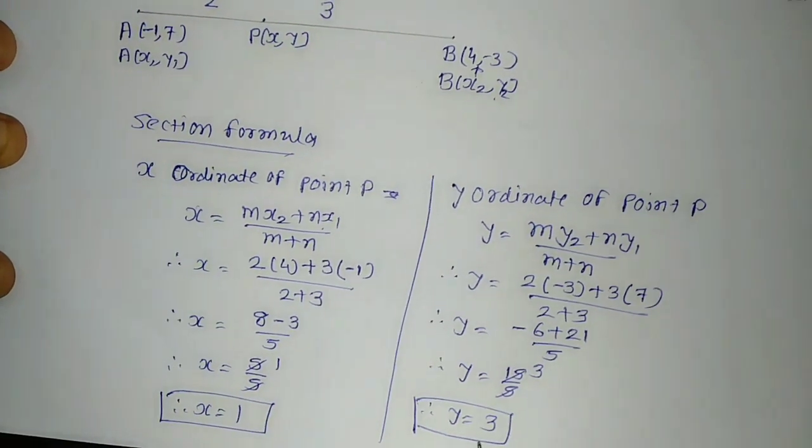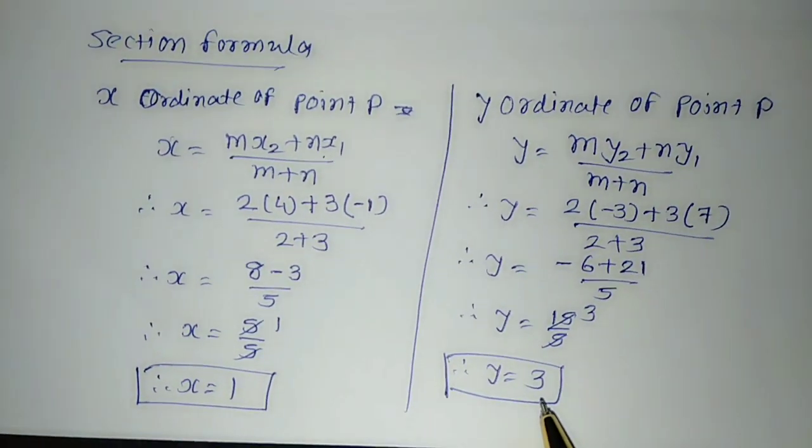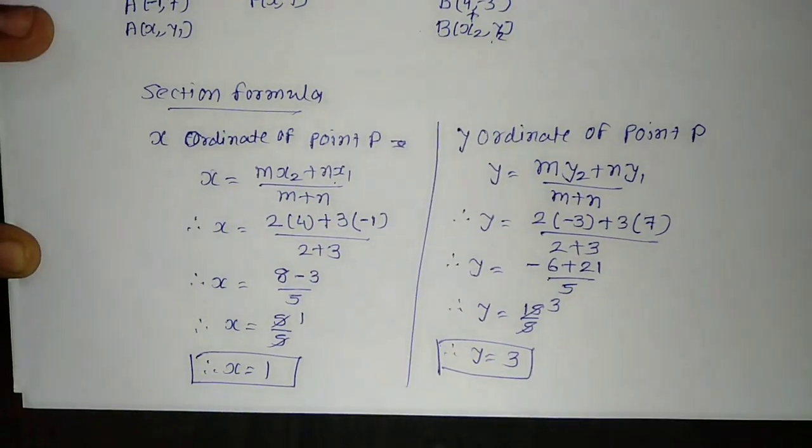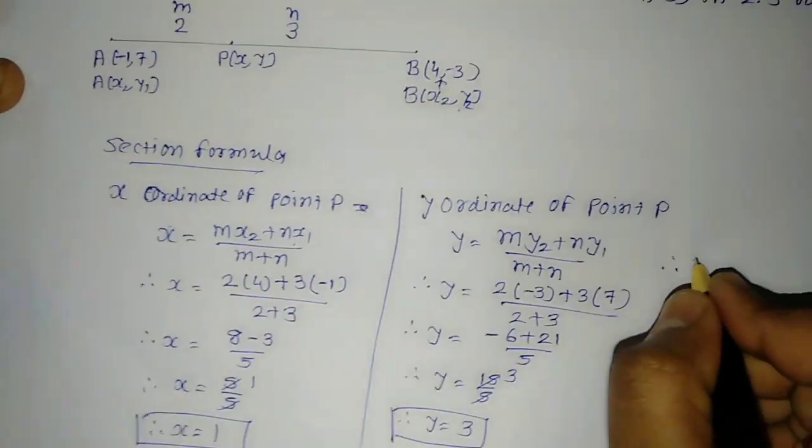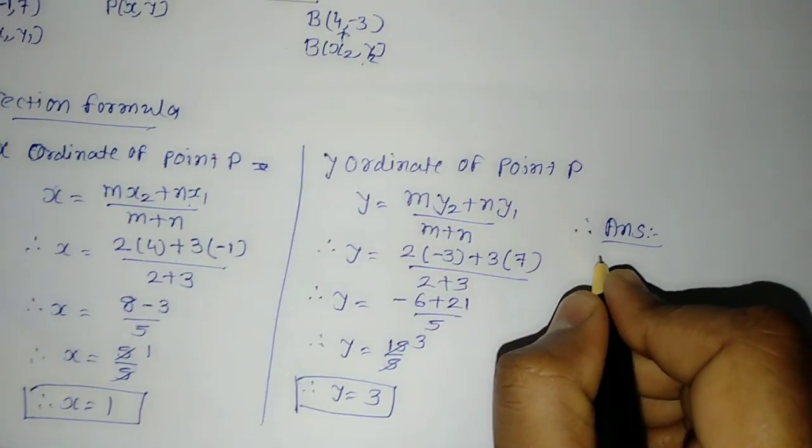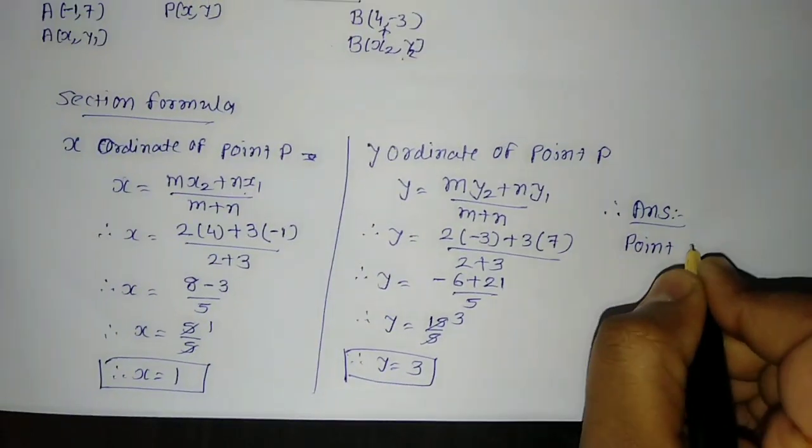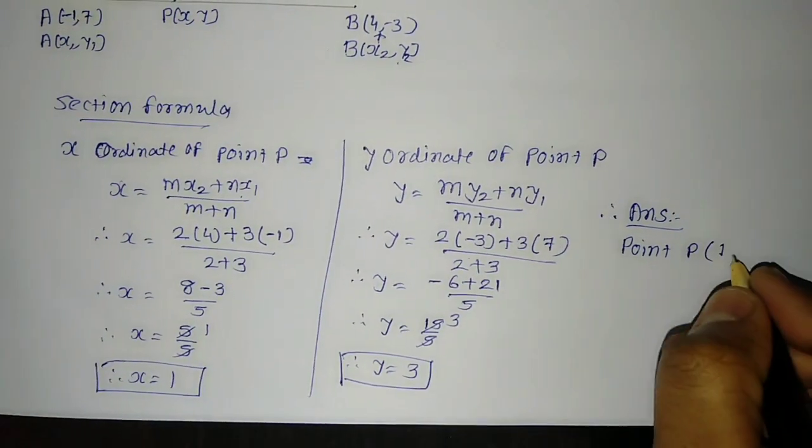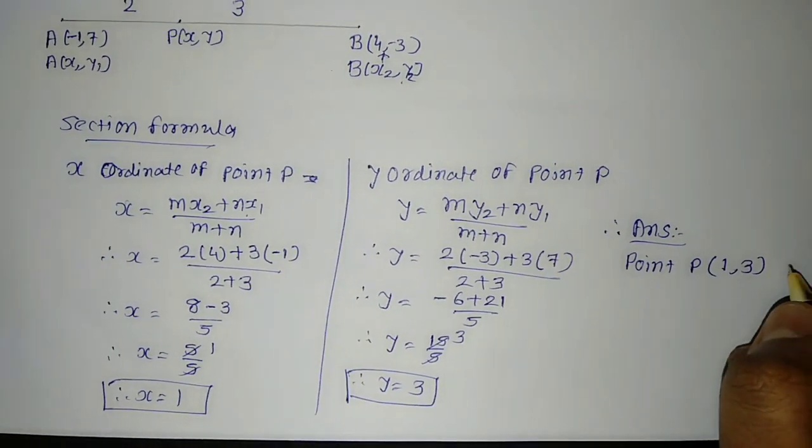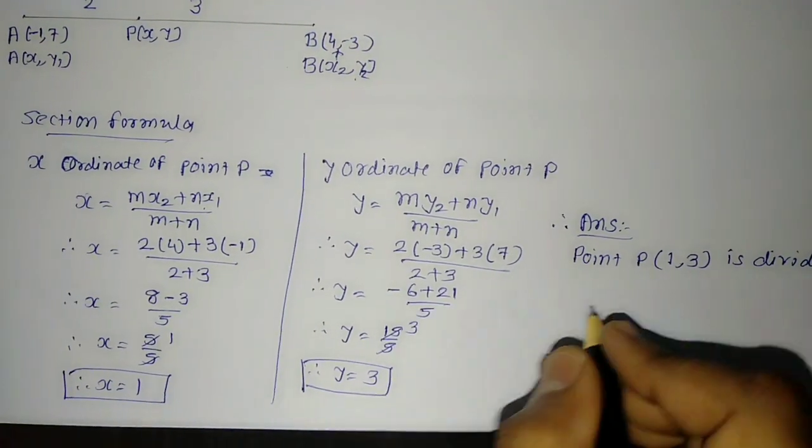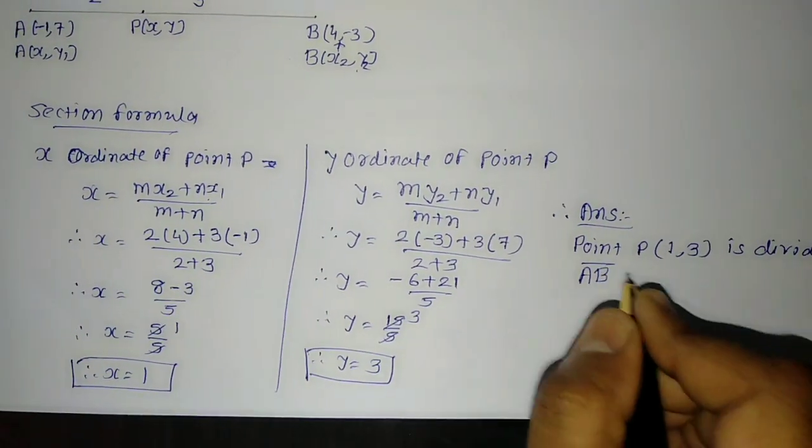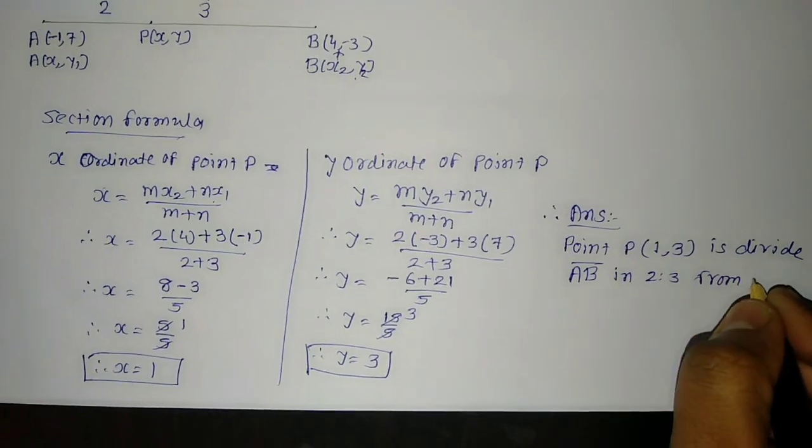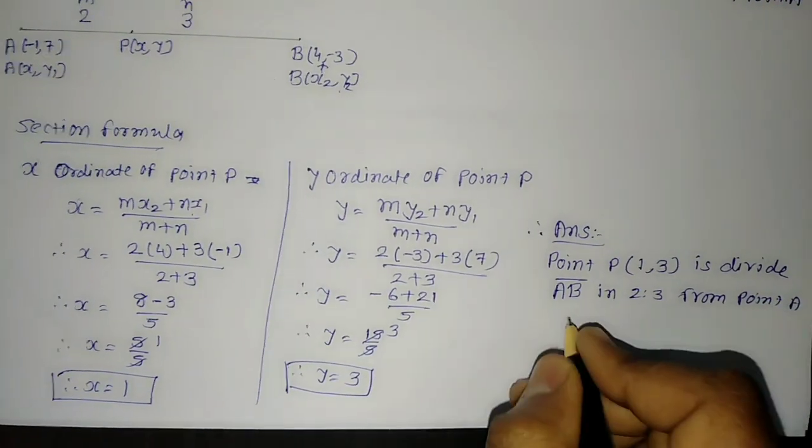We got the X ordinate and Y ordinate of point P. Answer: Point P(1, 3) divides line segment AB in 2:3 from point A side.